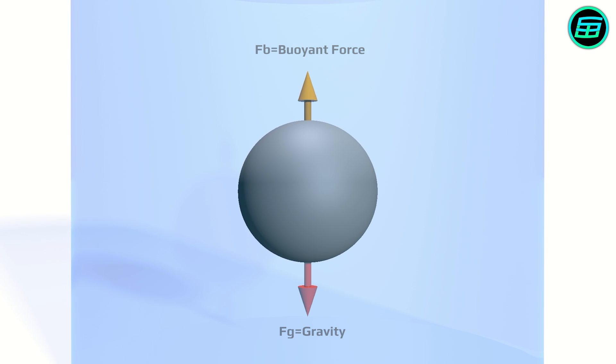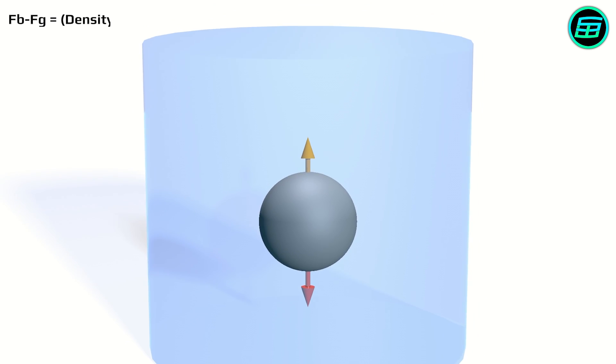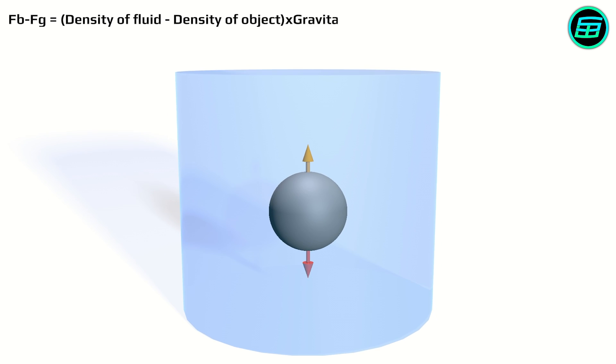If we think about the difference between these two forces, we can write down a formula. Buoyant force minus gravitational force equals density of fluid minus density of object times gravitational acceleration times the volume of the object.